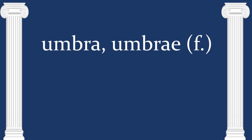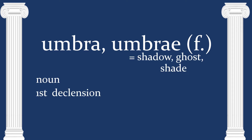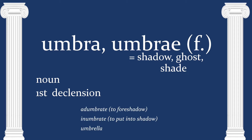Next we have umbra, umbrae, another noun of the first declension, and this means shadow, ghost, or shade. We get lots of words from this. The easy one is umbrella, because when you hold it up it gives you shade — although an umbrella for sunlight is called a parasol these days. We also get words like adumbrate, meaning to foreshadow, and inumbrate, meaning to put something into shadow.